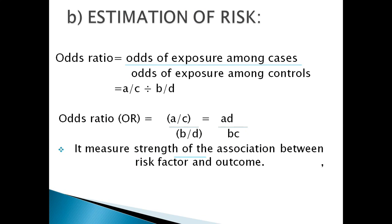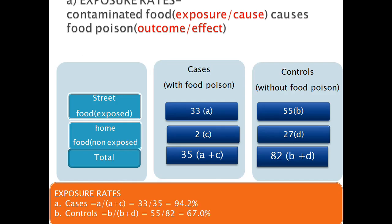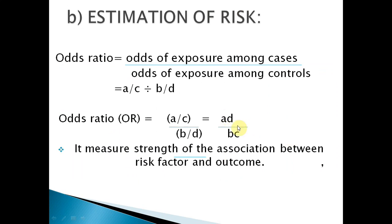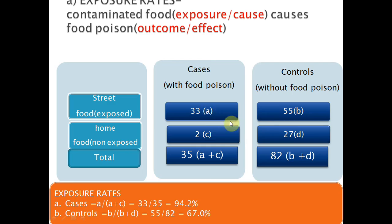The odds ratio is the measure of the odds of exposure among cases versus controls. Odds means chances. The formula involves the cross product: a divided by c, divided by b divided by d, which mathematically becomes ad divided by bc. So the odds ratio = ad/bc.